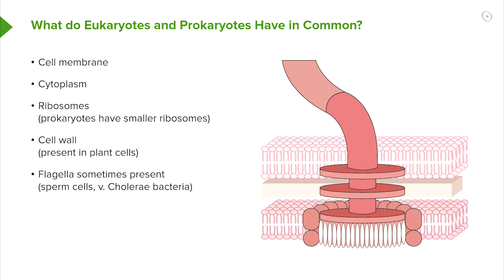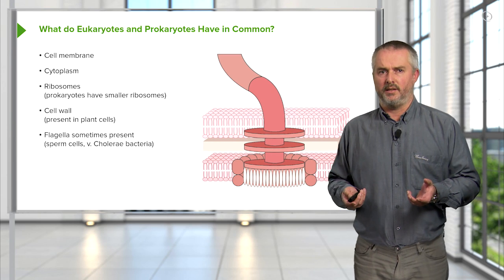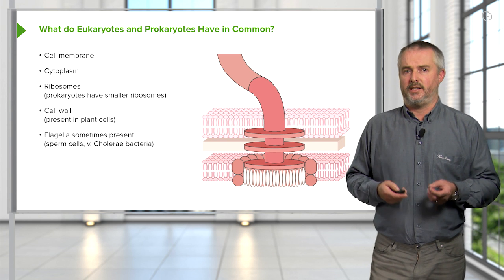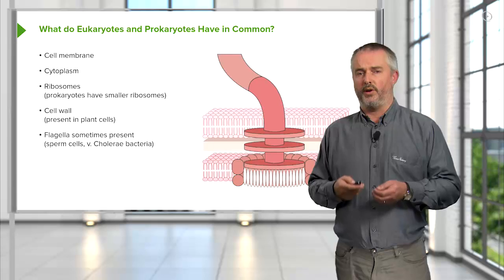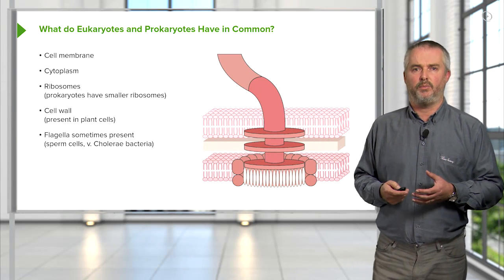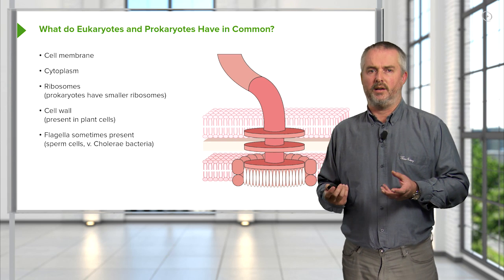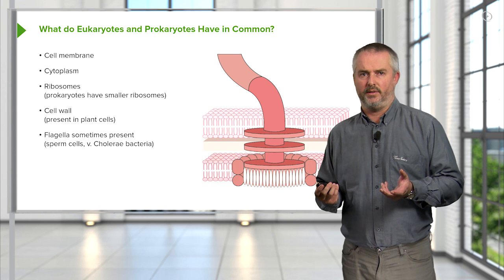What do eukaryotic and prokaryotic cells have in common? Both have a cell membrane made of a phospholipid bilayer, which controls what enters and leaves the cell. Both have a cytoplasm where chemical reactions occur, and both have ribosomes, although prokaryotes have smaller ribosomes that are free in the cytoplasm, whereas in eukaryotes the ribosomes are on the rough ER, encrusted on membranes. Cell walls are present in plant and fungal cells and in all prokaryotes, though the prokaryotic cell wall is made of peptidoglycan, the plant cell wall of cellulose, and the fungal cell wall of chitin.